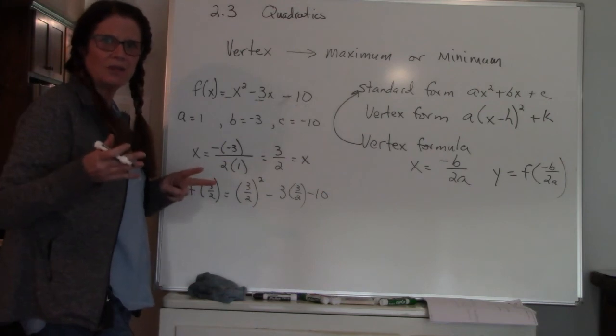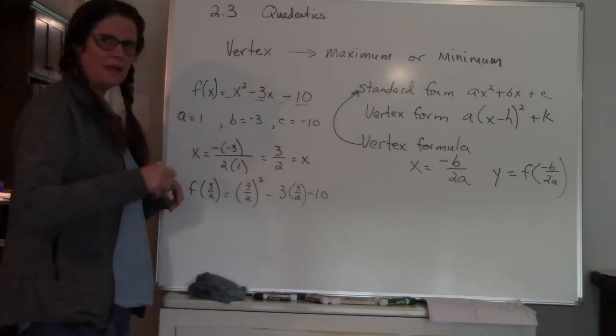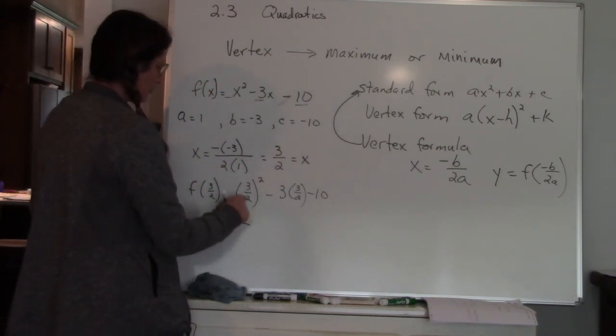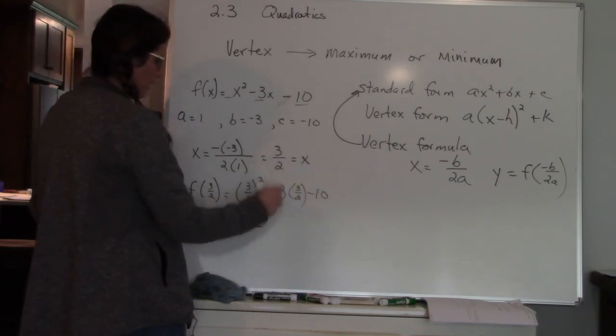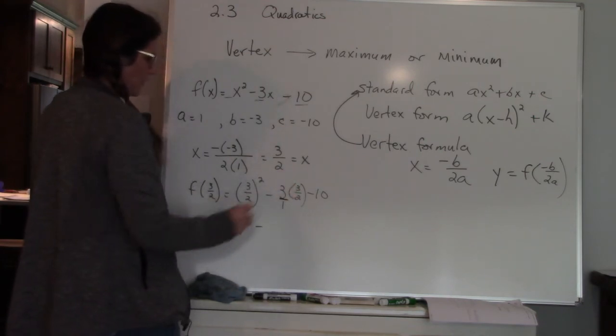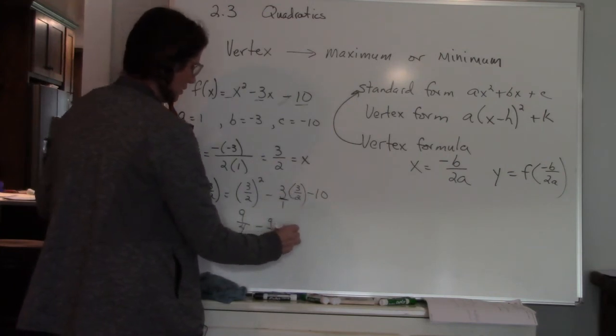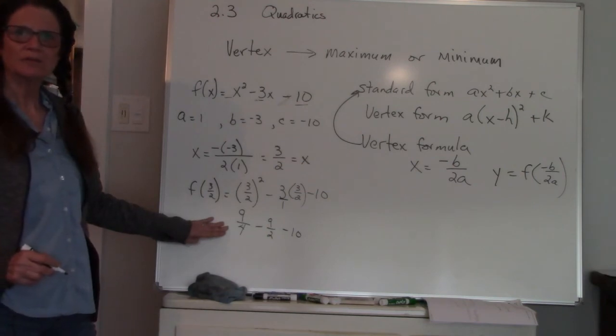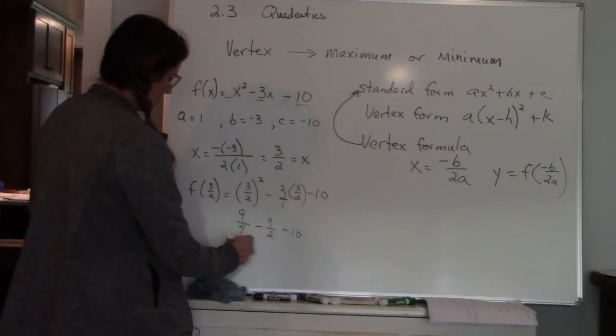squared—here's why I like leaving it as a fraction. Look, three halves squared is three halves times three halves, so three times three is nine, two times two is four. Three times three halves—this is like three over one, so three times three is nine, one times two is two, and then minus ten. So now I